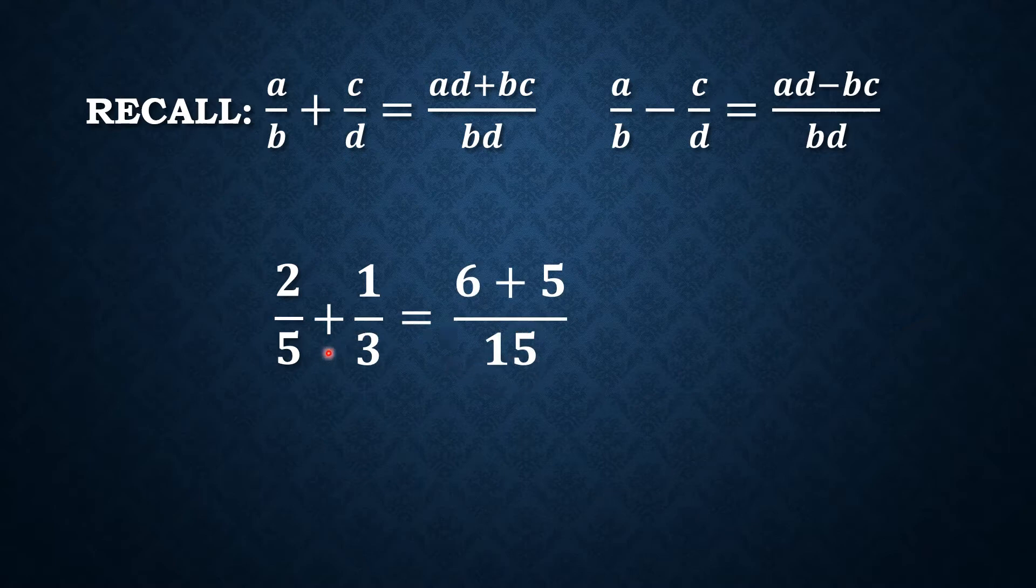Because the least common multiple of 5 and 3 is 15. Now we divide 15 by 5 and then we multiply by 2. So 15 divided by 5 is 3 times 2 and that is 6. 15 divided by 3 is 5 times 1 is 5.